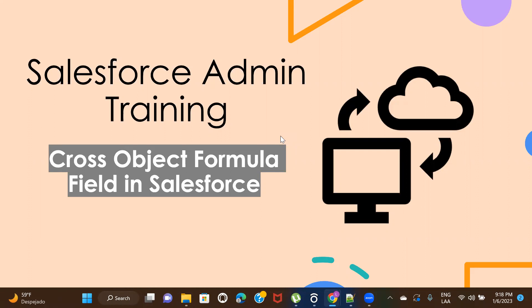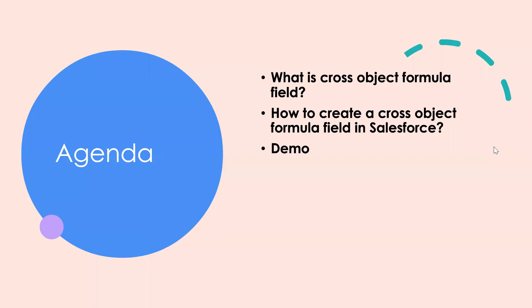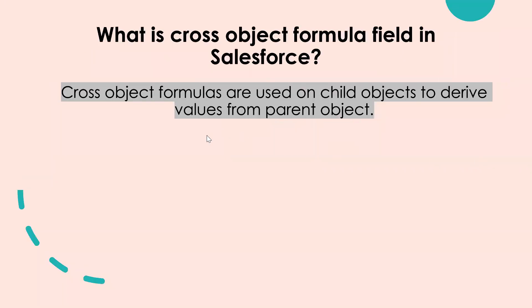Let's have a look at the agenda for the session. We'll understand what a cross-object formula field is, then we'll see how to create one, and in what situations or conditions you can create a cross-object formula field. I'm going to show you this with an example.